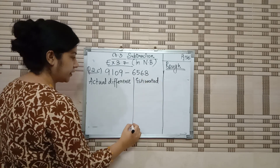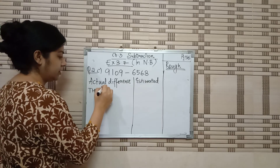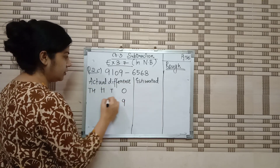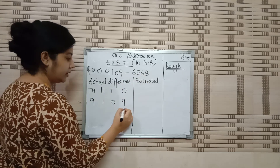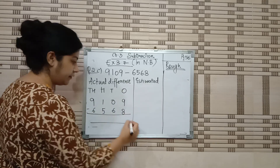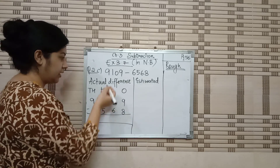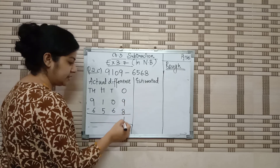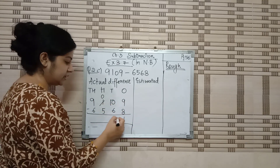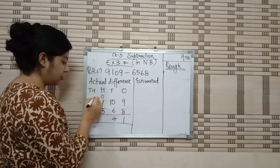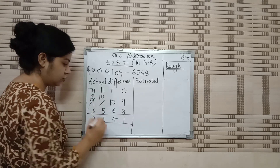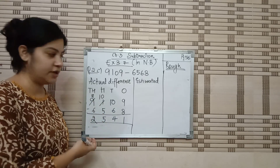Place values: 1000s, 100s, 10s, and 1s. First number: 9, 1, 0, 9. Second number: 6, 5, 6, 8. Now the actual difference: 9 minus 8 is 1. Next, take a borrow — 10 minus 6 is 4. Then 0 is not possible, so borrow again — 10 minus 5 is 5. And 8 minus 6 is 2. So this is our actual difference: 2541.